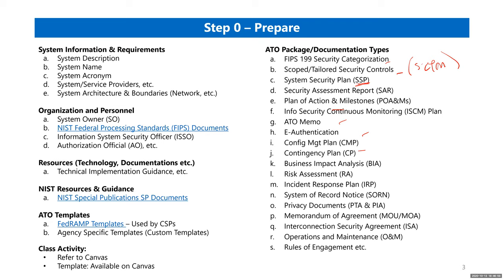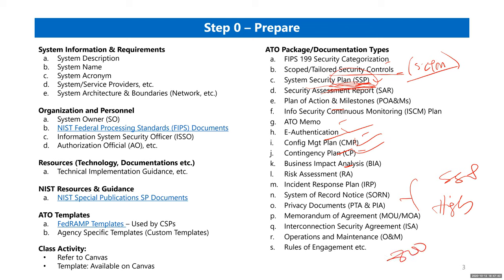By contrast, FedRAMP templates require you to document all security controls within the SSP itself. An SSP for a Federal High system can easily reach 400 to 800 pages depending on how much implementation detail is included.